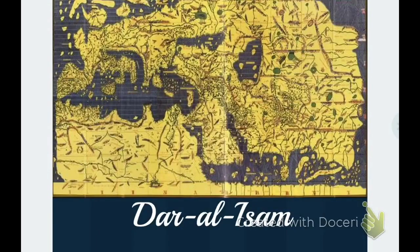So let's go through this screencast, and I hope you enjoy it. Here we are, looking at Dar al-Islam. This is an old map that was made during the post-classical era. It's kind of skewed.